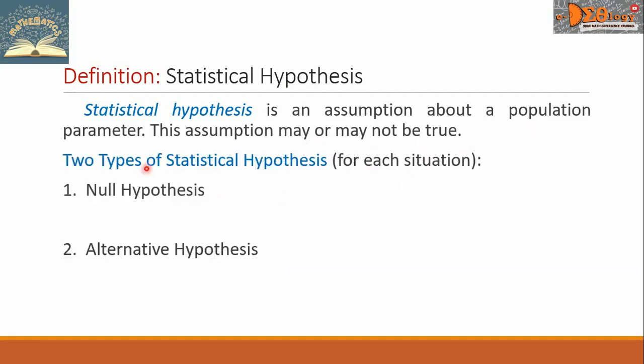There are two types of Statistical Hypothesis for each situation. The first is the Null Hypothesis. The second is the Alternative Hypothesis.